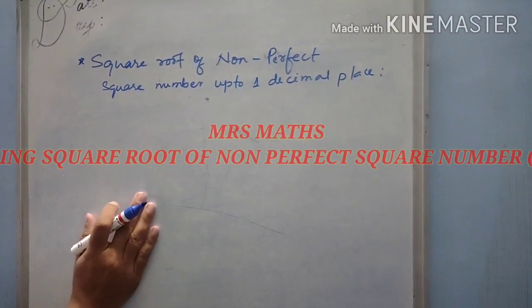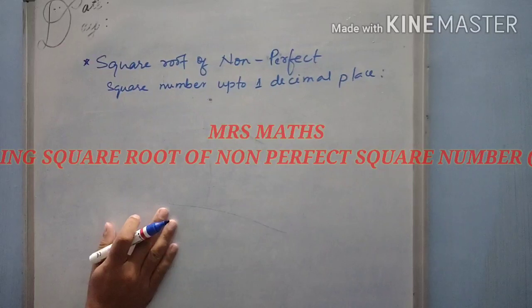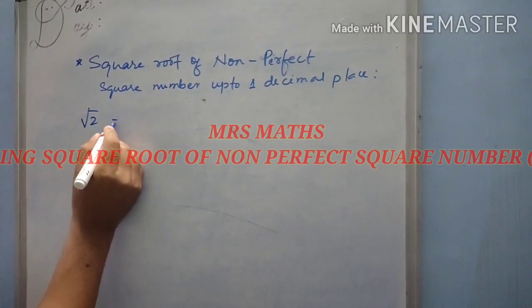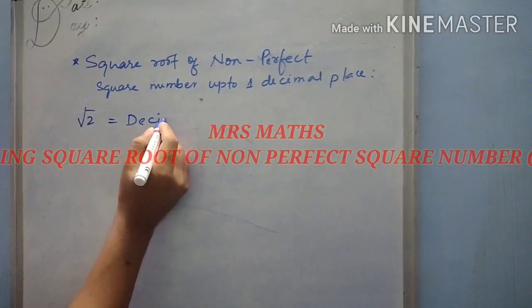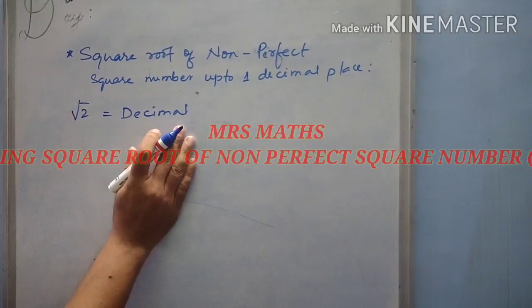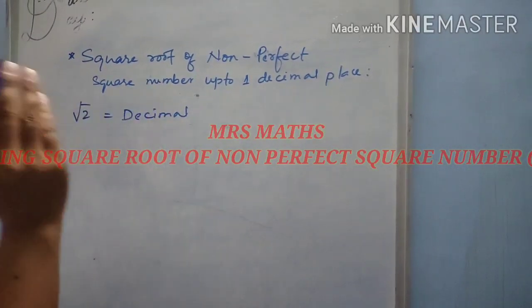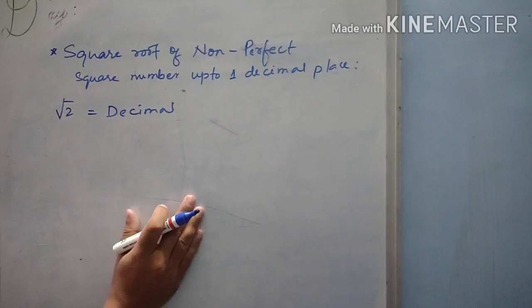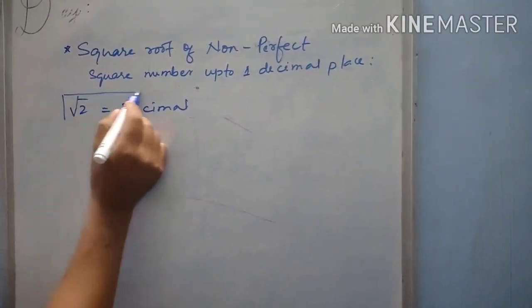As we already know from lower class, if we find the square root of any non-perfect square number, it will be a decimal number. For example, if I find the square root of 2, it will be a decimal number and it will be going on without terminating and without repeating. That's why root 2 is called irrational number.